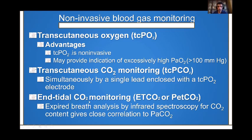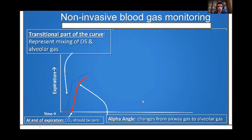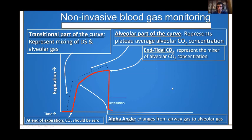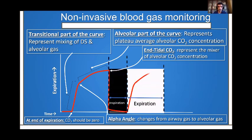Another way is using end-tidal CO2 to measure CO2 levels. It measures CO2 in the expired breath using infrared spectroscopy, and it correlates very well with the actual PaCO2 or partial pressure of CO2. The CO2 level rises during expiration, reaching a maximum at end-expiration — that is where we measure end-tidal CO2. When the patient inspires, the CO2 level in the detector drops. This is where the end-tidal CO2 measurement is taken.